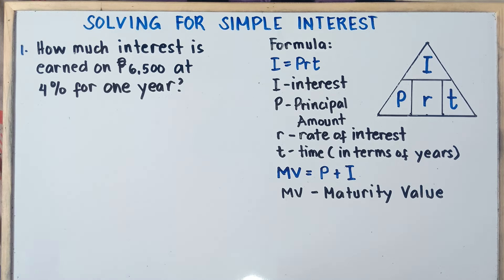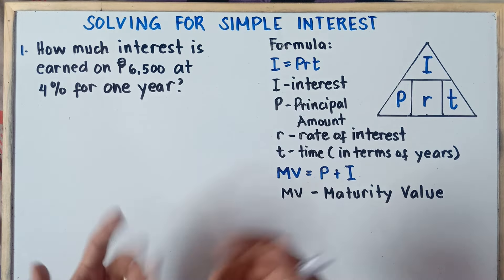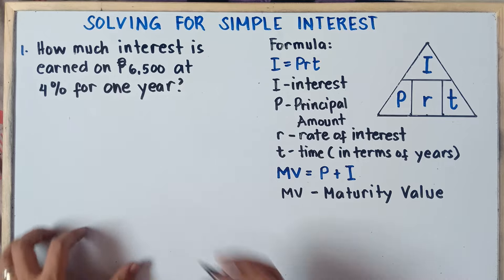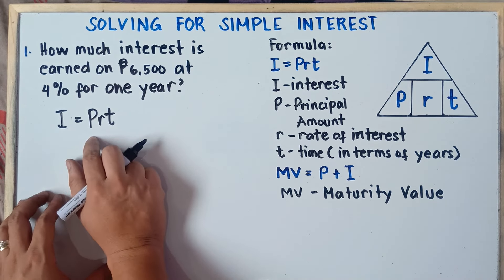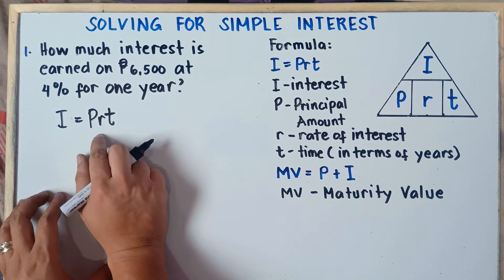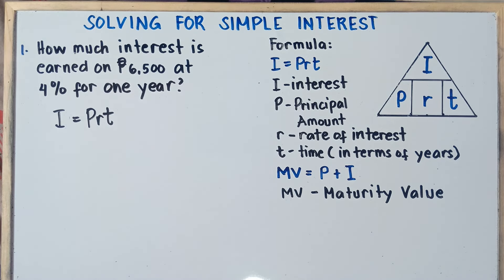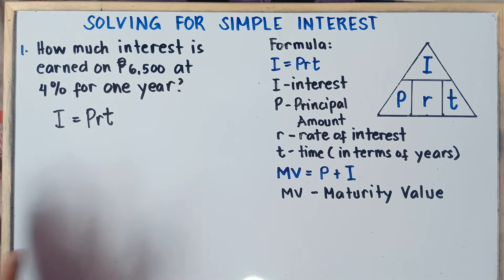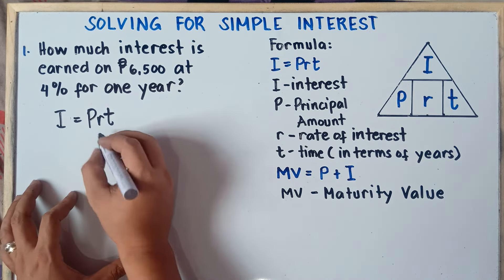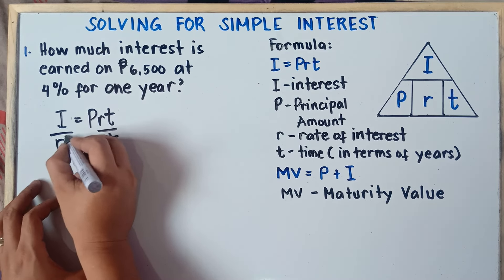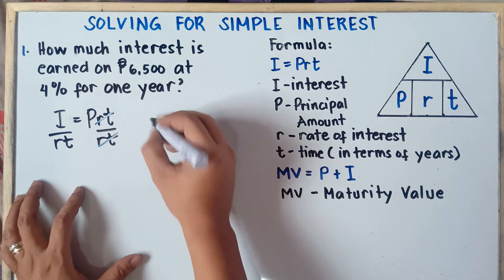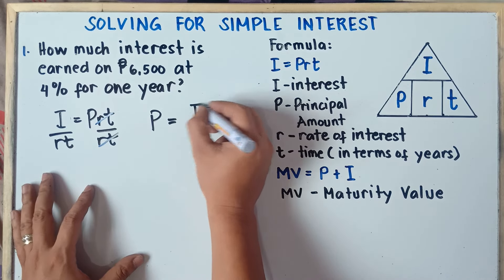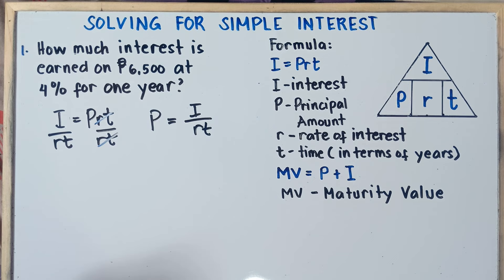Now, what if you are looking for the principal? How will you formulate the formula? Starting from I equals PRT, to get the principal, simply divide both sides by RT so we can cancel RT out. Therefore, the formula for P equals I over RT. Simple as that.